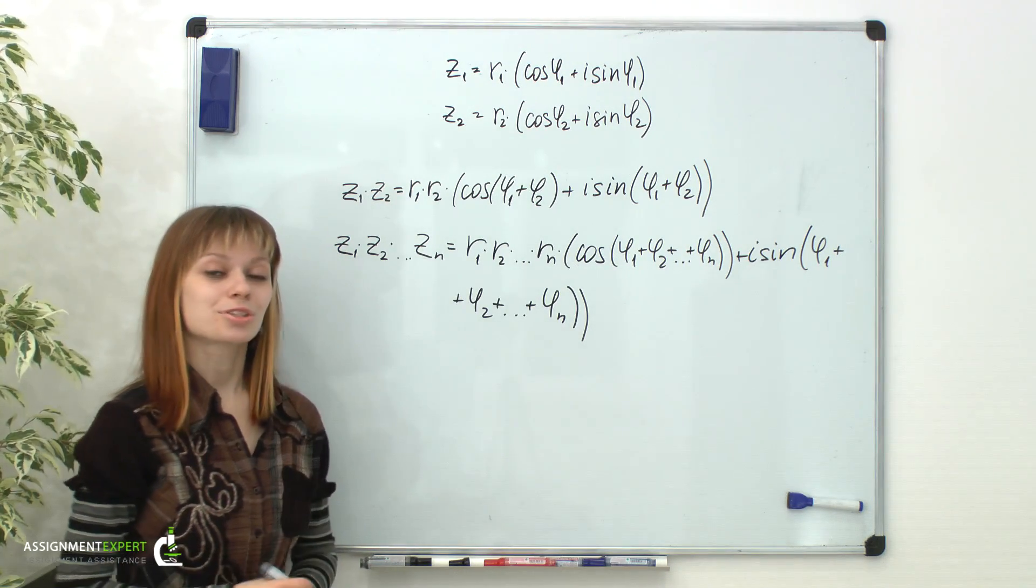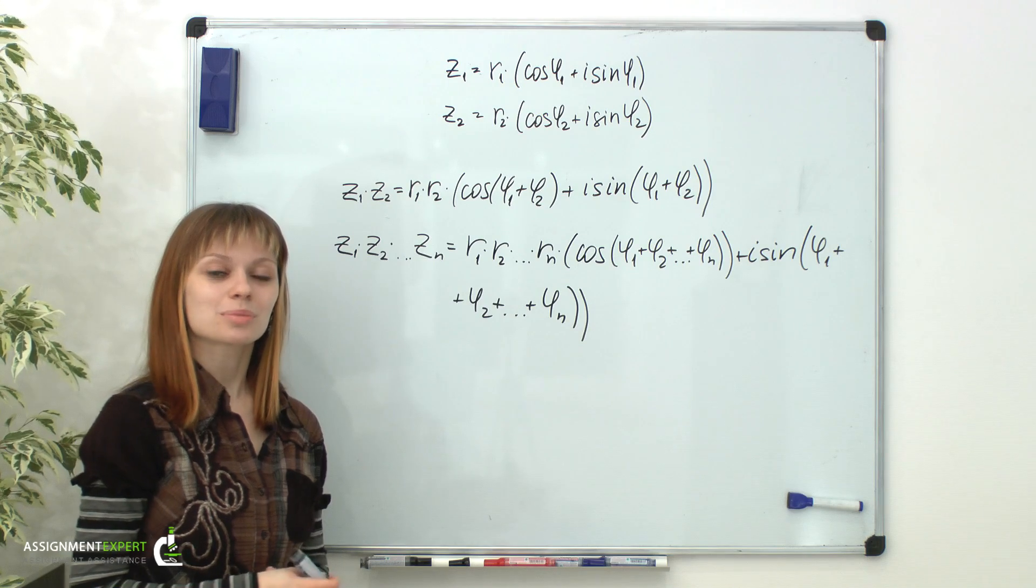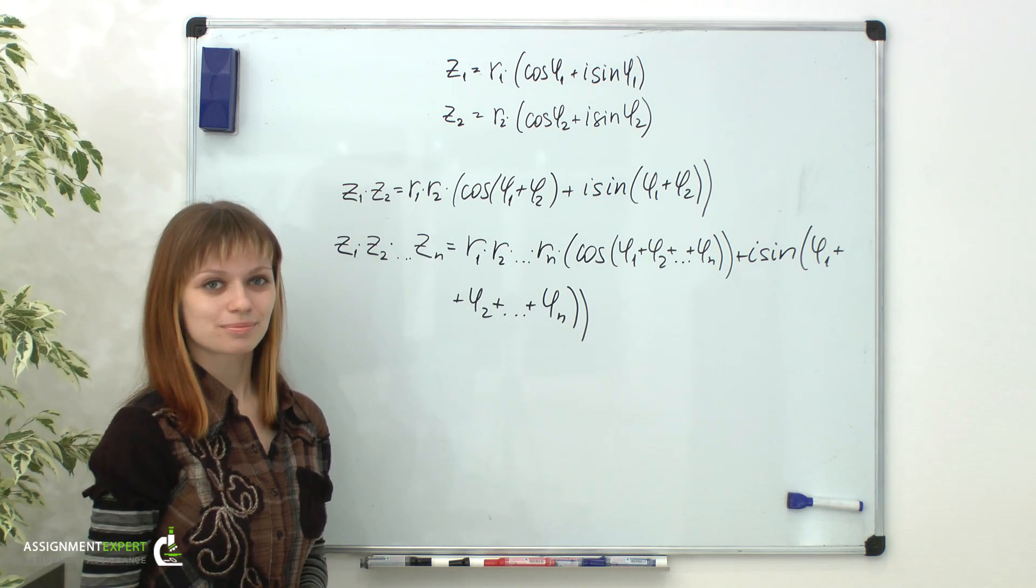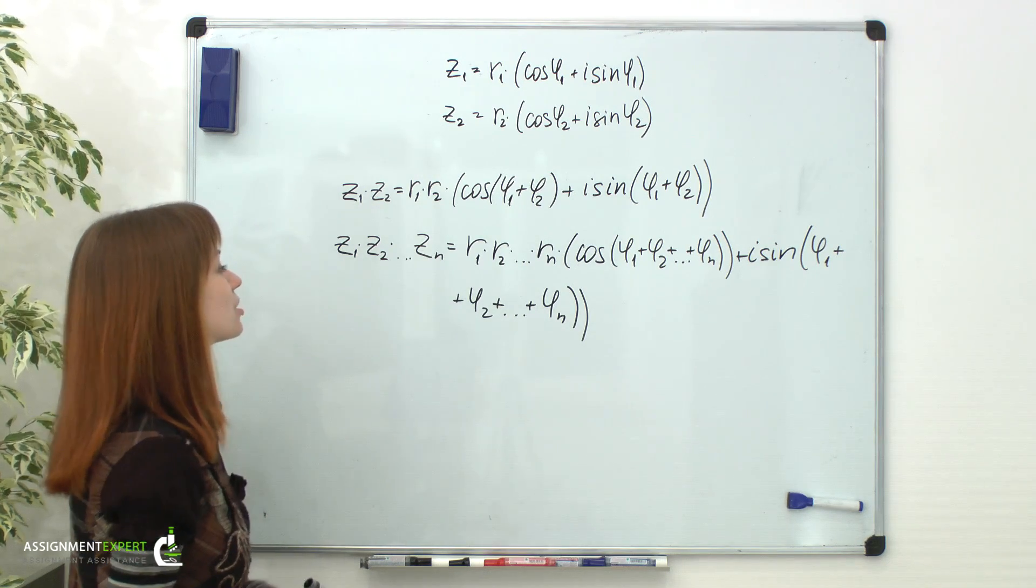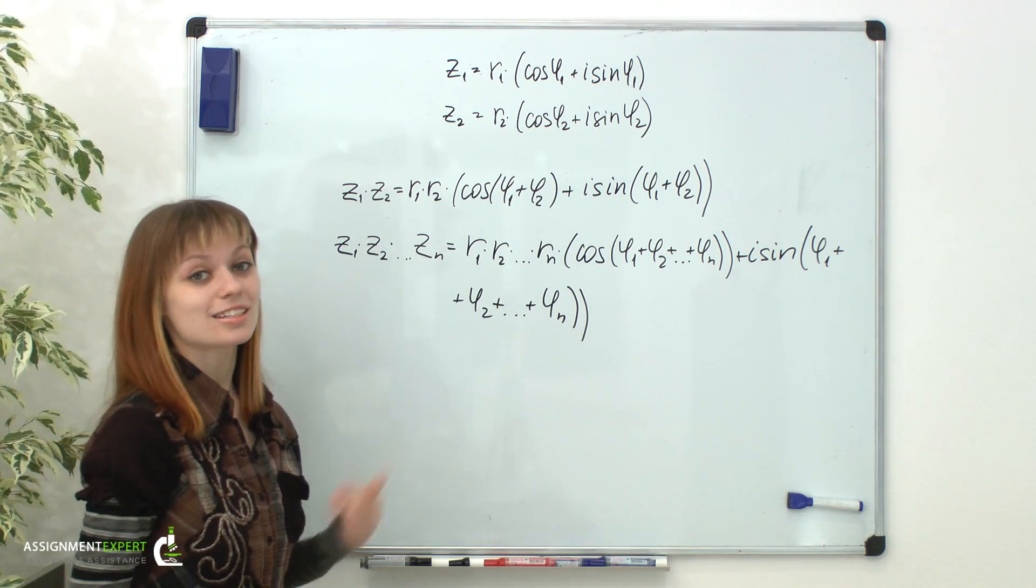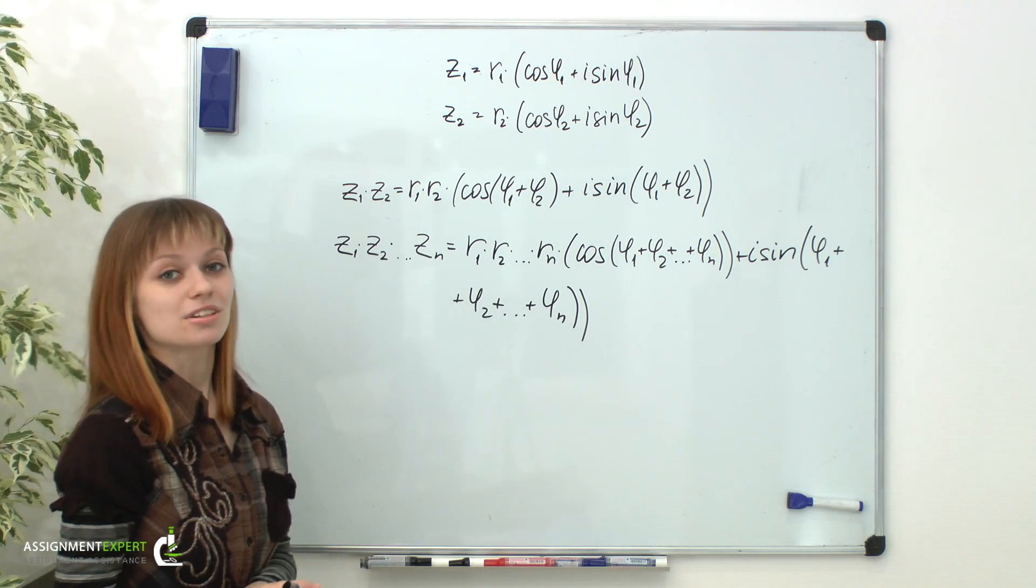Now raising a number to nth power means that we need to multiply it by itself for n times. For the case of a complex number in trigonometric form, it means that we need to multiply its module by itself for n times and add n of its arguments.